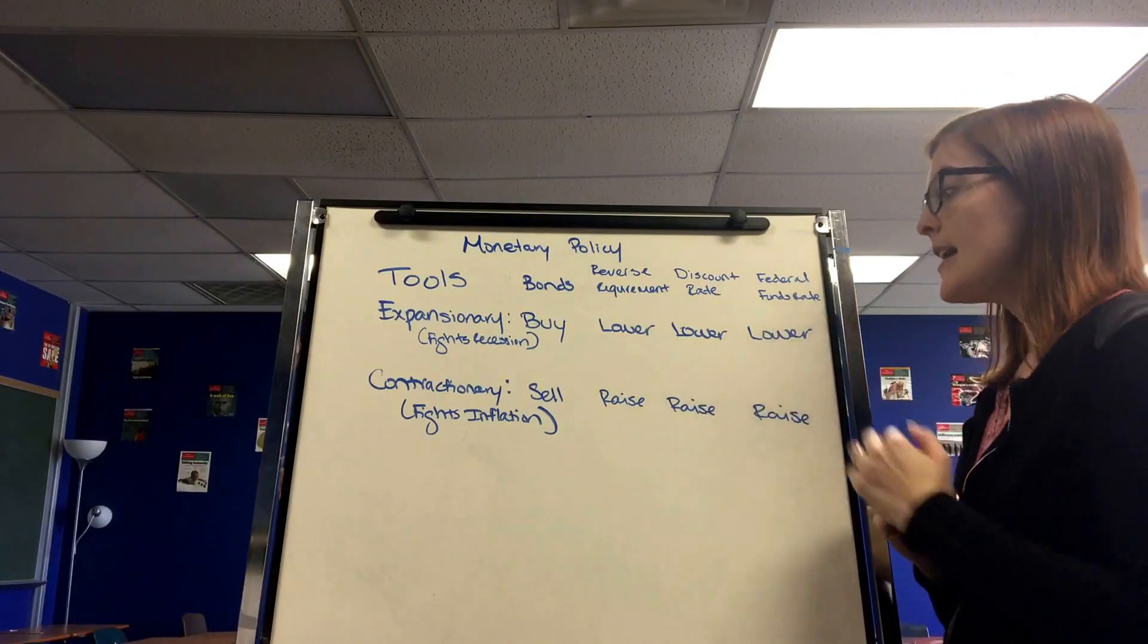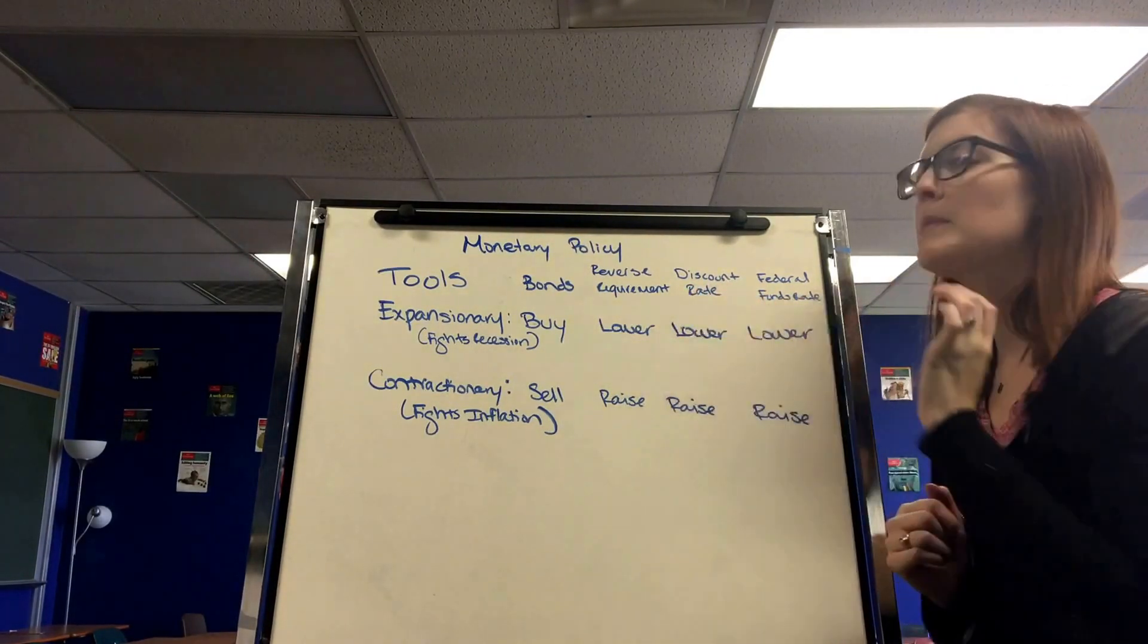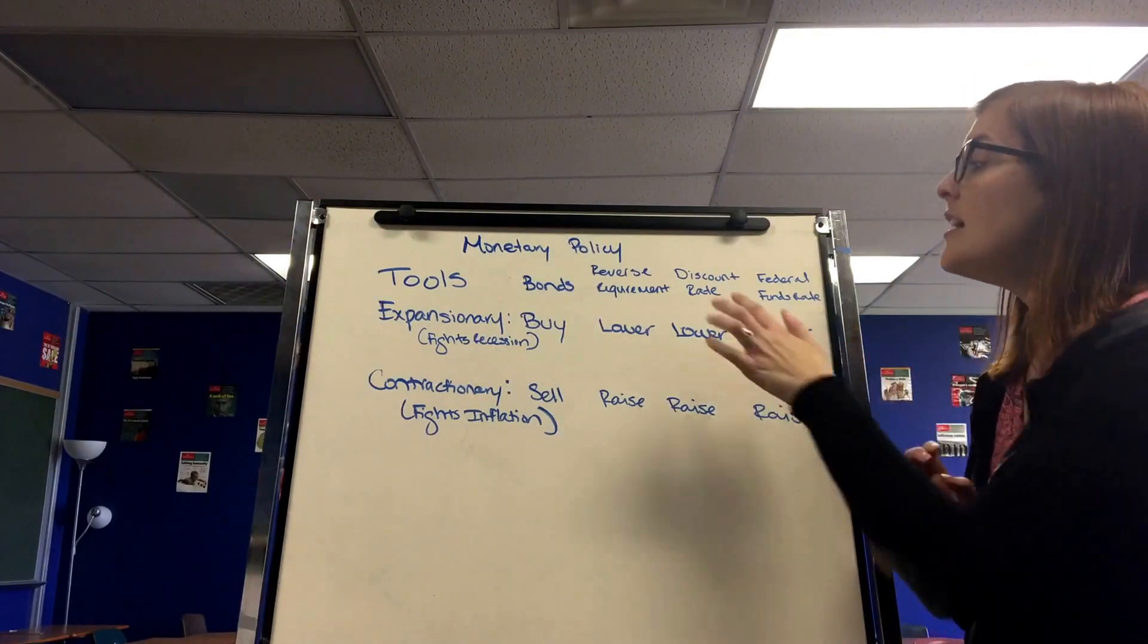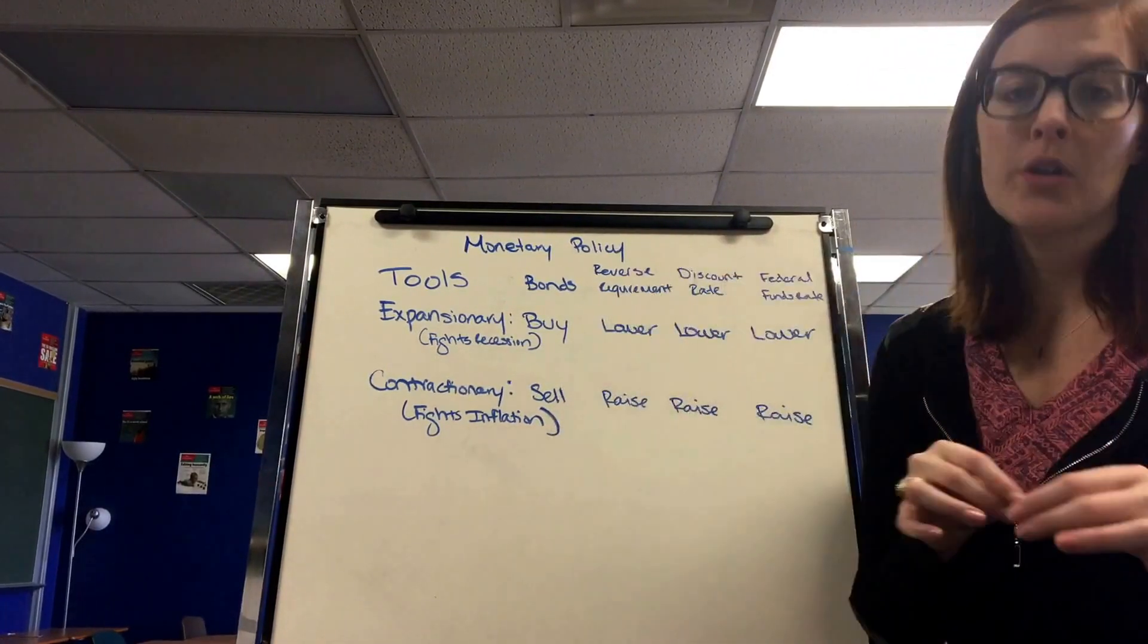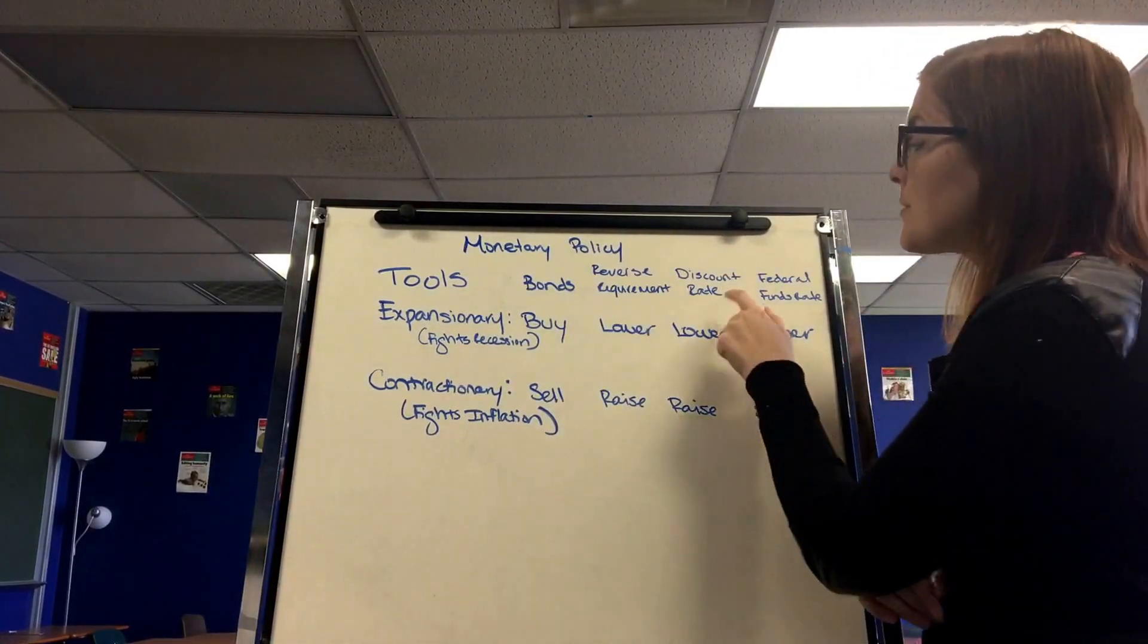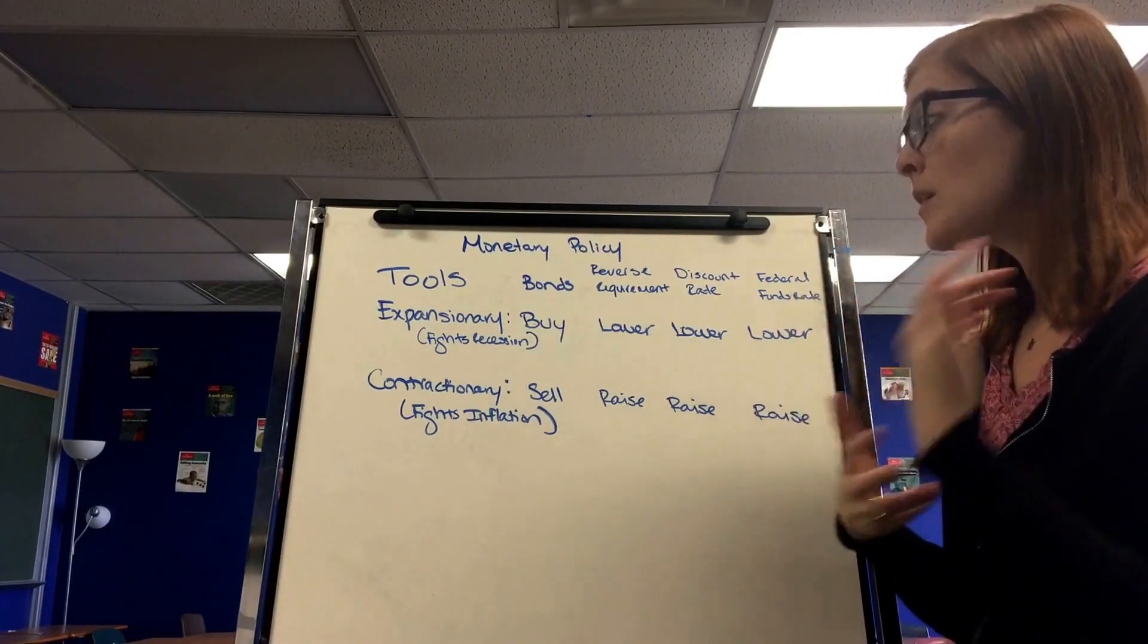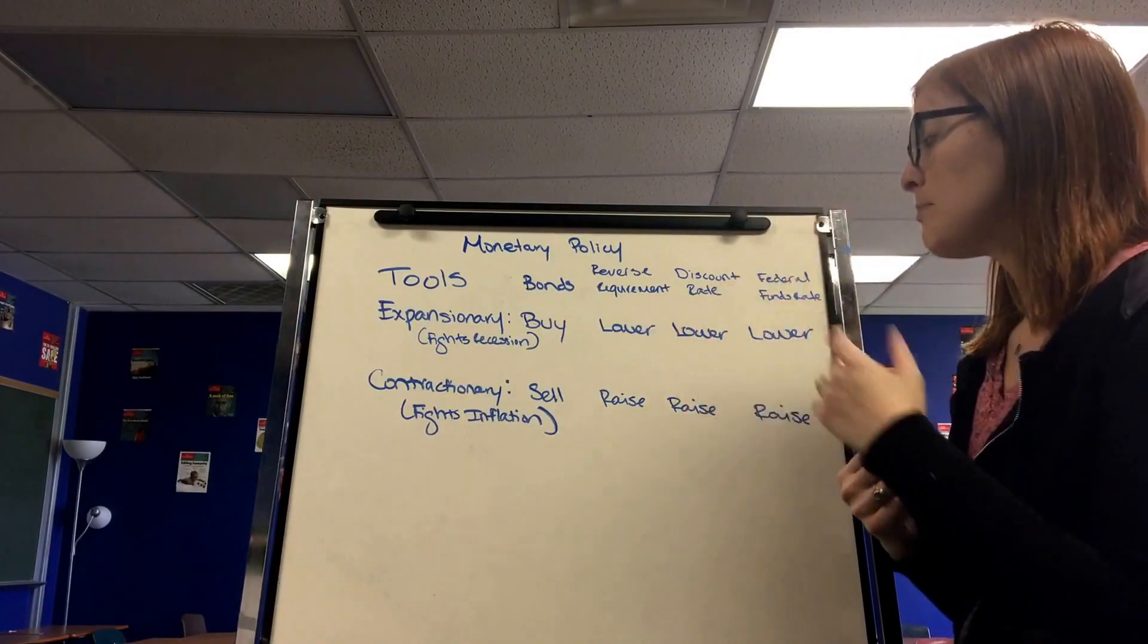The next one is the discount rate. The discount rate and the last one are both types of interest rates, and knowing the difference between the two has been on the AP exam many times and is easy to confuse. The discount rate is the interest rate from the Federal Reserve to commercial banks. This is when the Federal Reserve is being the lender of last resort. They're only supposed to do these in emergencies and it wasn't used very often until the 2008 financial crisis when they bailed banks out.